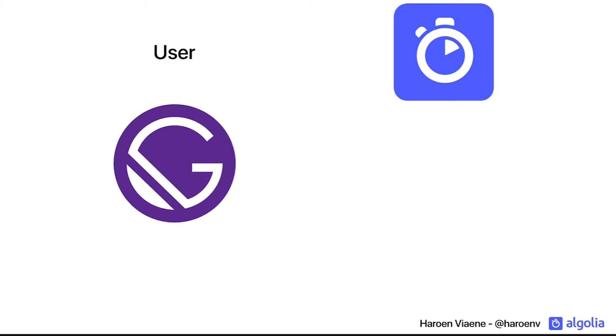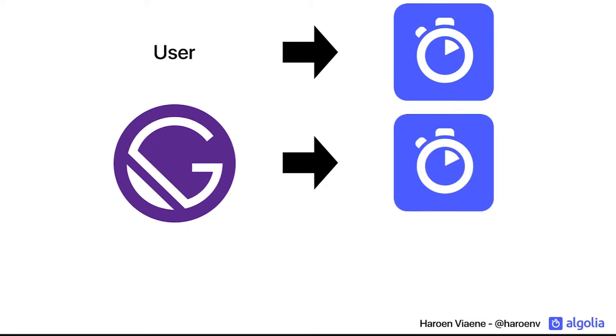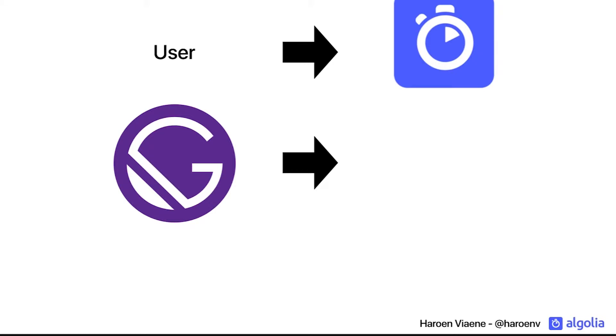On one side you have Gatsby and its GraphQL data; on another side you have Algolia, on a different index. When a user is on your website, it queries Algolia directly. However, when you're updating your site and doing a new build, you write to a different index instance. Then, when you're done building, you move one to the other — and there's never any downtime, because those are atomic operations that just move data without any removal.